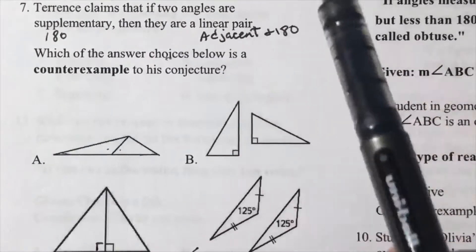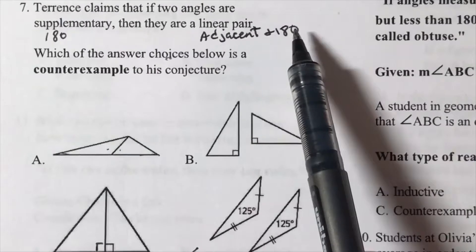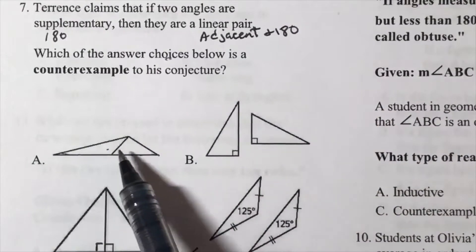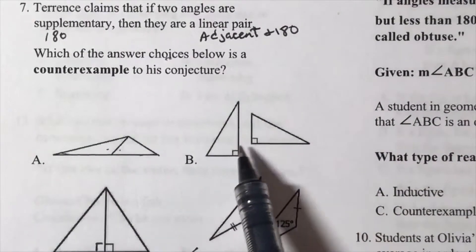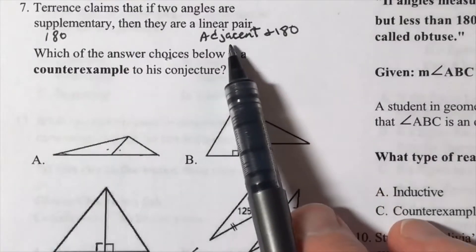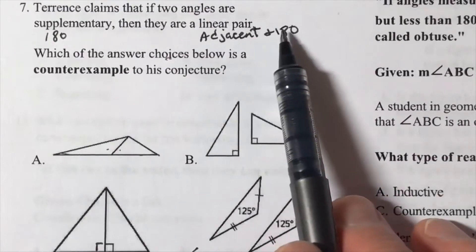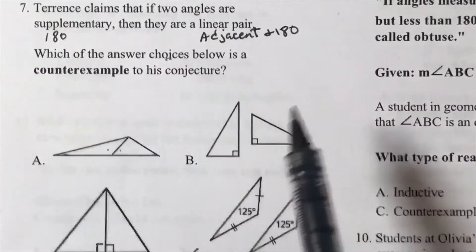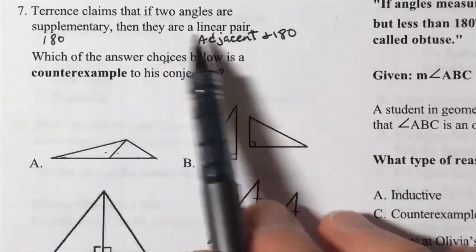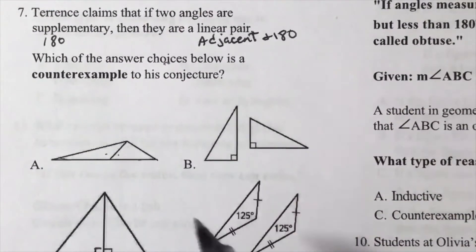Adjacent and 180. These are adjacent and 180, adjacent and 180. Here's the one that's not adjacent and 180. Here's the one that's proving the conclusion false, right here.